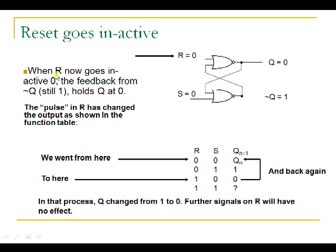Now if I apply 0 at the reset input and S input is 0, as Q input is 0 and S is 0, the output becomes 1. This output is fed back as input to R, so the output is again 0. Whenever both R and S are 0, the output does not change — it stays holding the present state output. Initially the circuit started with Q=0 and now at R=1 there is a change in the output, with Q changing from 1 to 0. Further signals on R will have no effect.